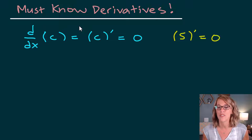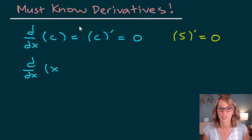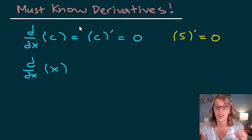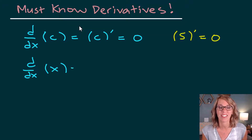The derivative of any constant is zero. Moving on to the derivative of just a variable to the first power: notice that the variable of differentiation d/dx matches the x, so it's got to be the same variable. This is equal to one.